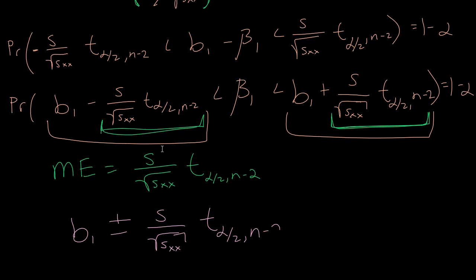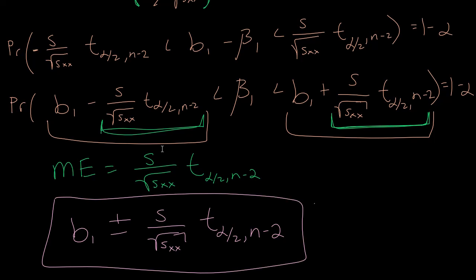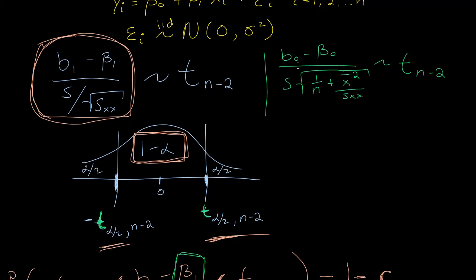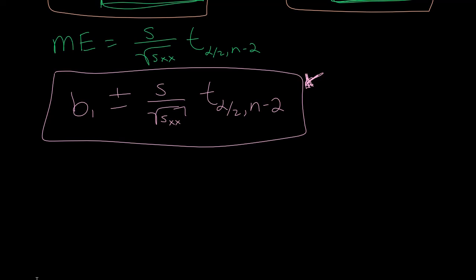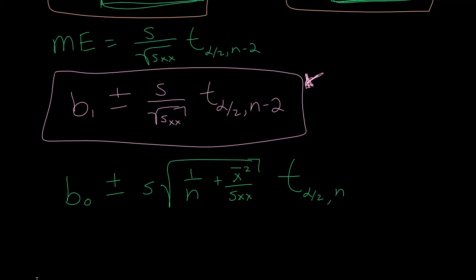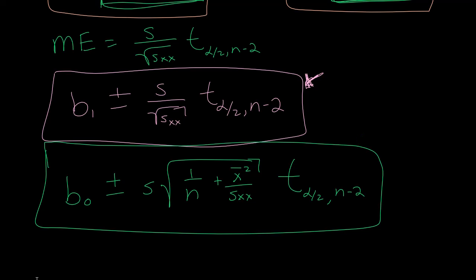The same type of derivation applies to b0, our estimate of the intercept, since it also follows the t-distribution. We end up with the confidence interval for beta-0 as: b0 plus or minus s times the square root of (1 over n plus x-bar squared over S_xx) times t_{alpha/2, n-2}. This is the confidence interval for the intercept.